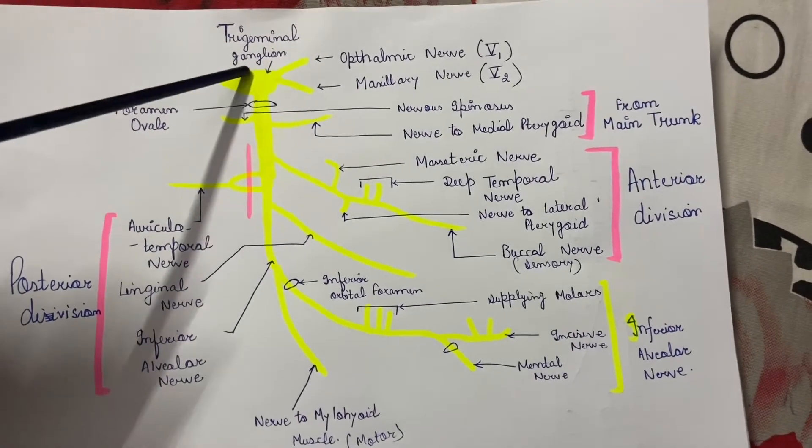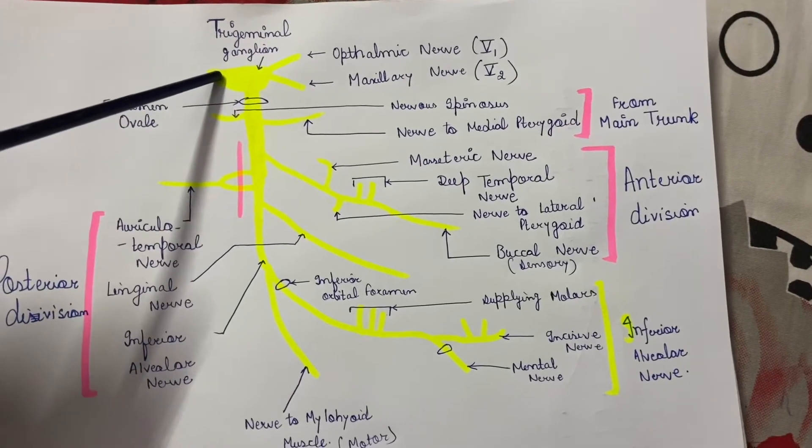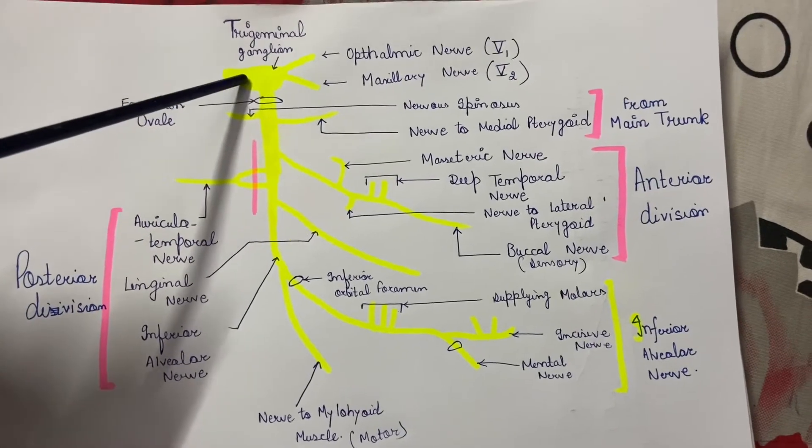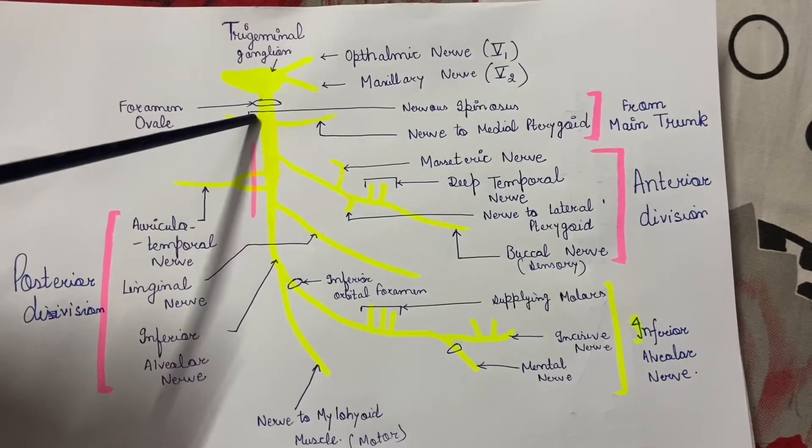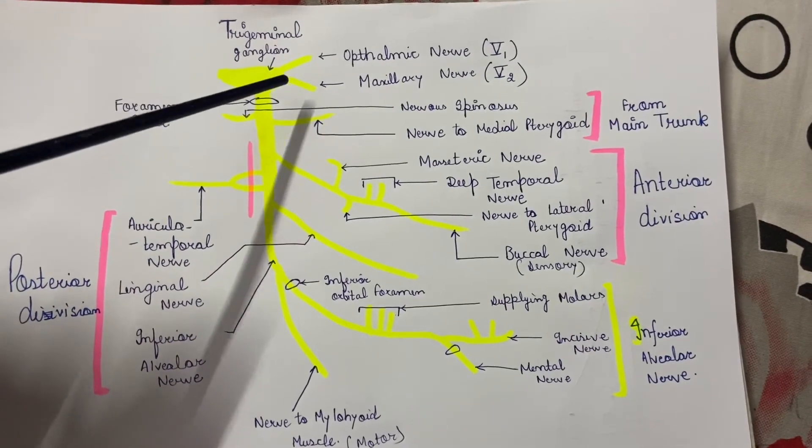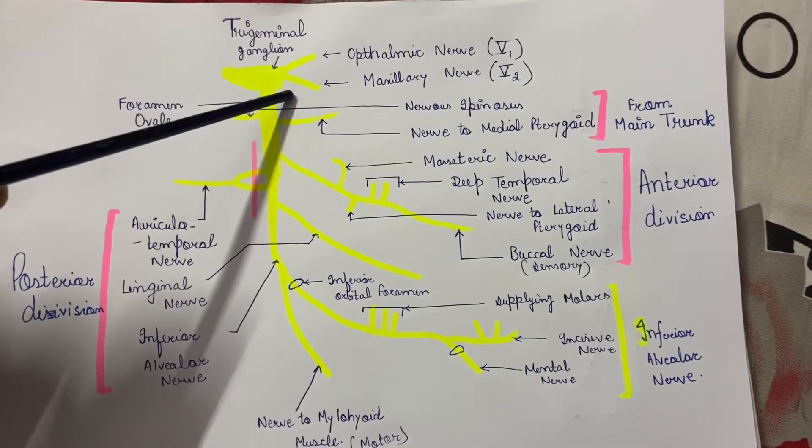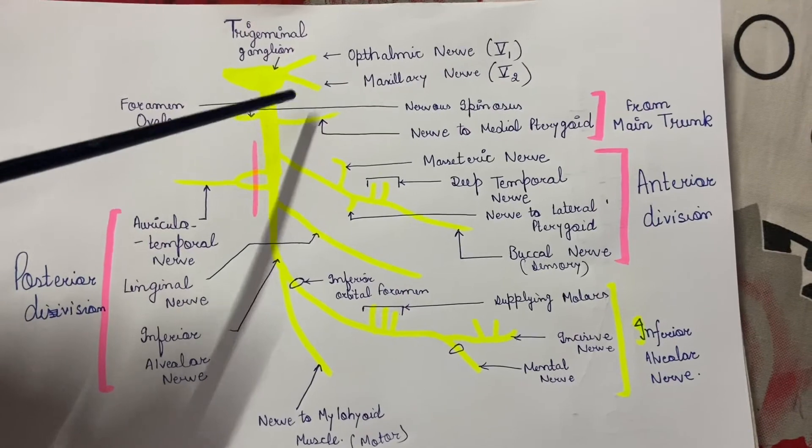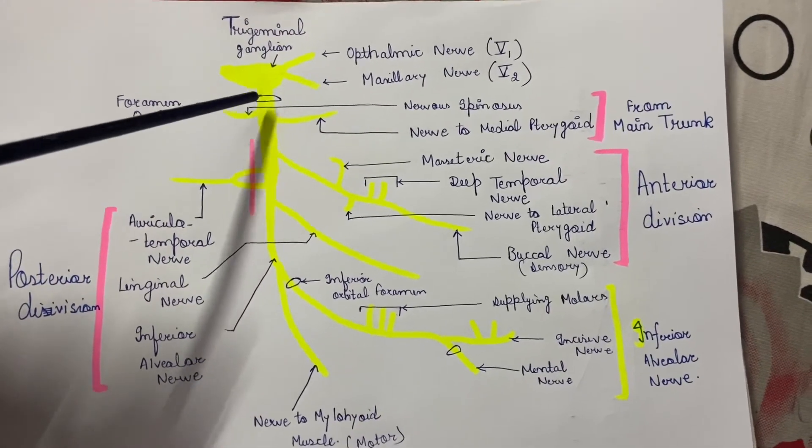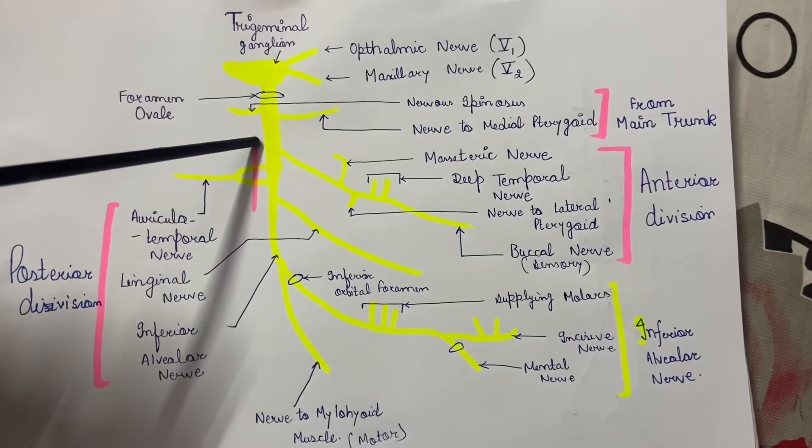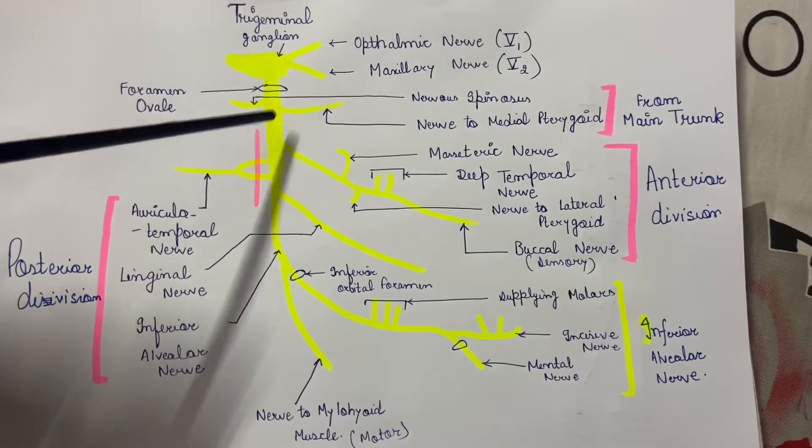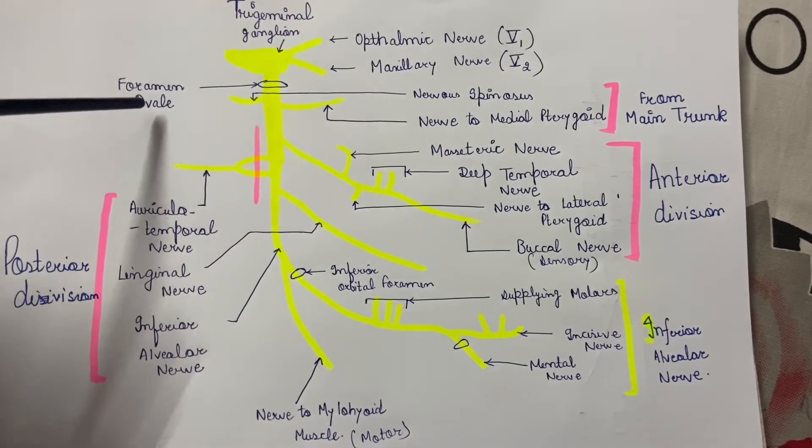Starting from the trigeminal ganglion, which is present in our brain, three divisions are formed. One is the ophthalmic nerve which supplies the eye portion, the maxillary nerve which supplies the upper part of our mouth or maxilla, and the mandibular nerve. This mandibular nerve came out of the cranium through a foramen known as the foramen ovale.